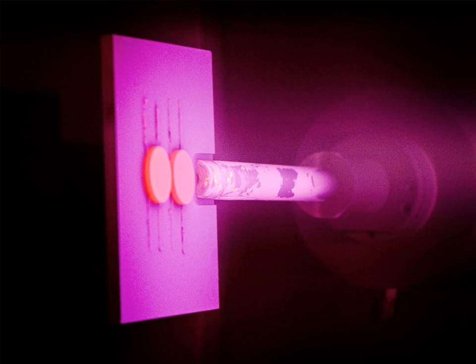Sputter deposition, in which a glow plasma discharge usually localized around the target by a magnet bombards the material sputtering some away as a vapor for subsequent deposition.